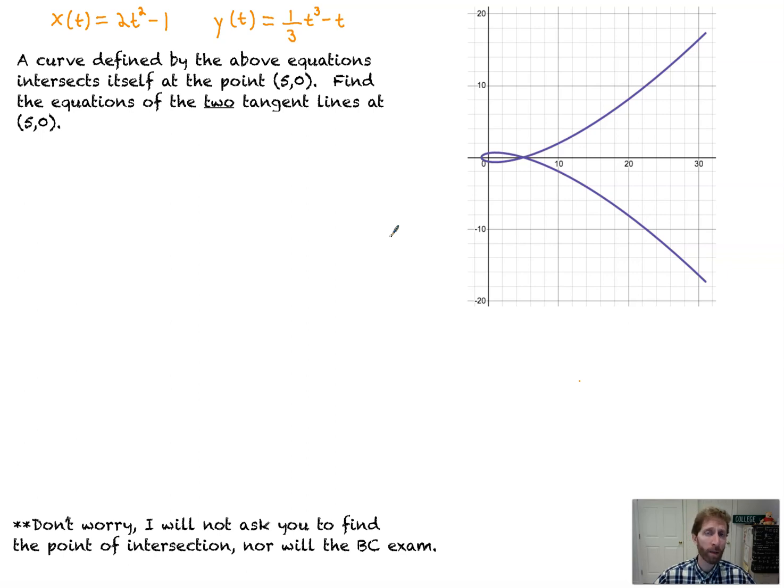We're just going to go over one problem in this video, so it'll be a short one. It's a problem that has come up before. I've seen it on the BC exam and in some Calc II courses, definitely in my BC Calc class for sure. It's one where we've got a curve that intersects itself, and we need to find the equations of the tangent line at that point. So on this graph, we're talking right there.